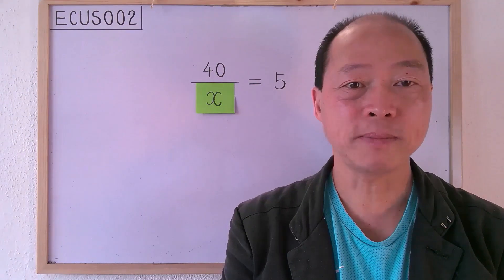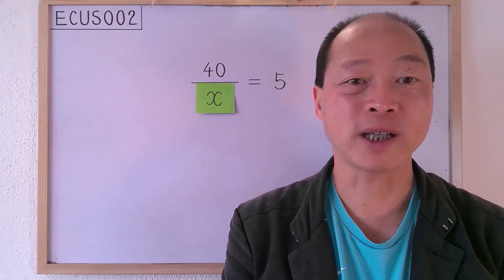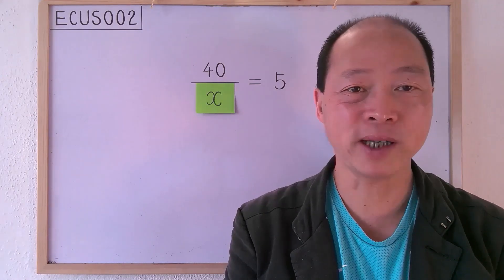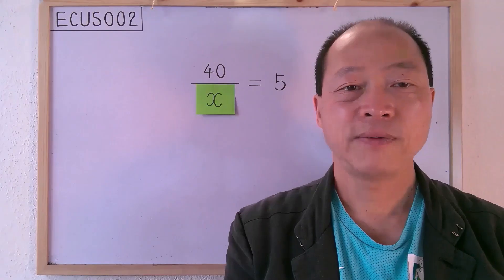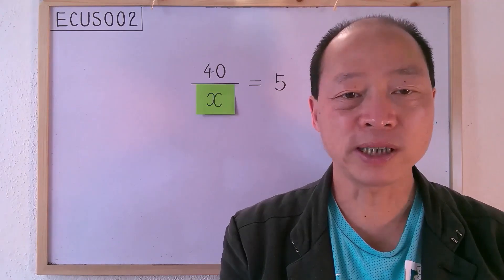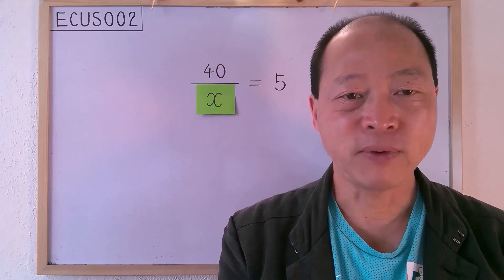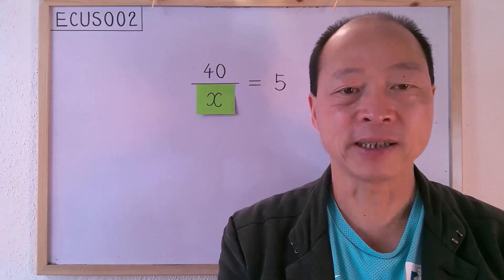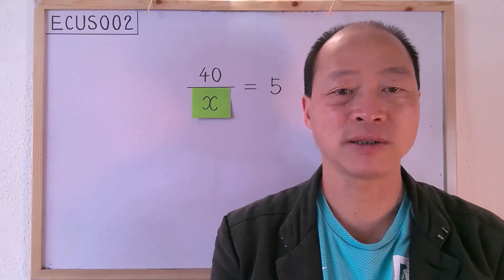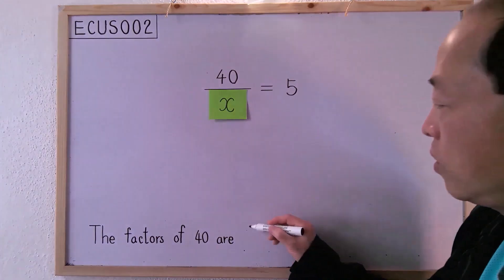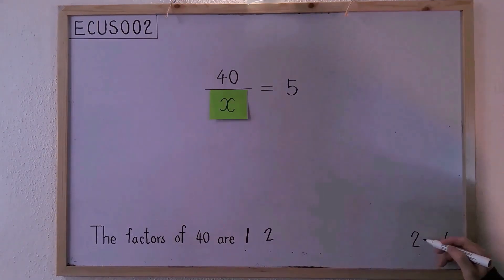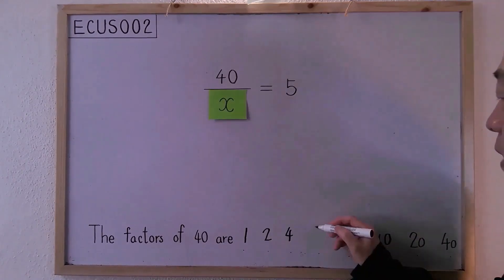Let's go back to our question — what's the number behind x? Instead of telling you a method directly, I'd like to analyze the meaning of the equation first. The equation means: when 40 is divided by a number, the result is 5. Think about it carefully — the result is 5 and 5 is a factor of 40. This will only happen when 40 is divided by a factor of its own. Therefore, the number behind x must be a factor of 40. Let's list out all the factors of 40: 1 and 40, 2 and 20, 4 and 10, 5 and 8.